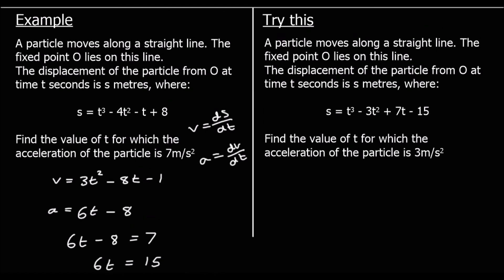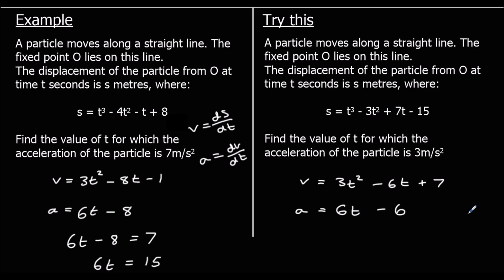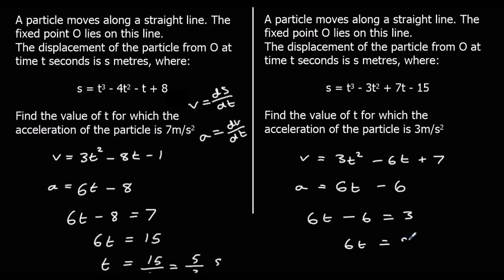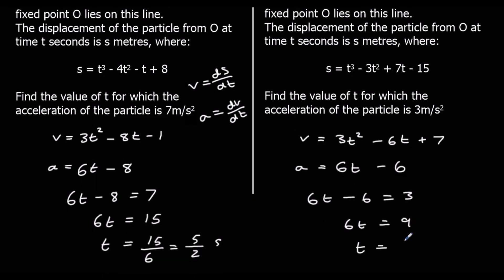Pause the video and give this one a go. We're given displacement; we want acceleration. Differentiating gives velocity: 3t squared minus 6t plus 7. Differentiating again gives acceleration: 6t minus 6. We want acceleration equal to 3: 6t minus 6 equals 3, add 6 to both sides gives 6t equals 9, so t equals 9/6, which is 3/2 or 1 and a half seconds.